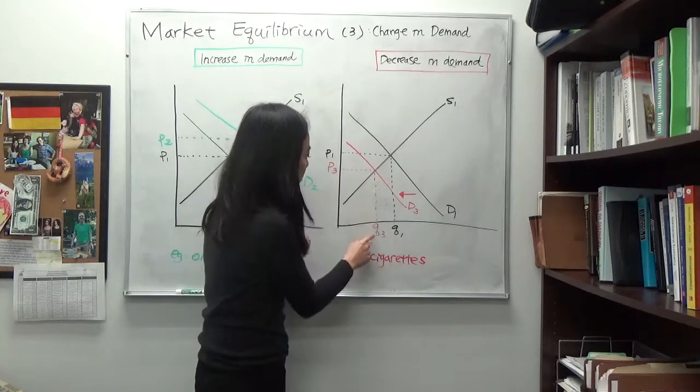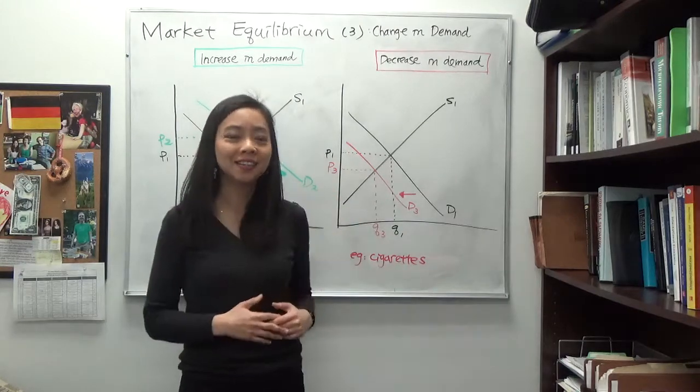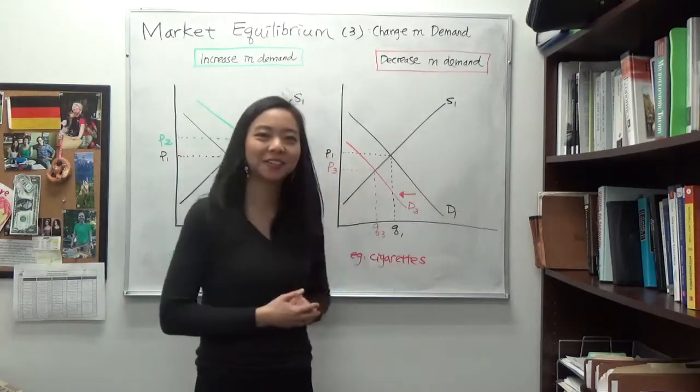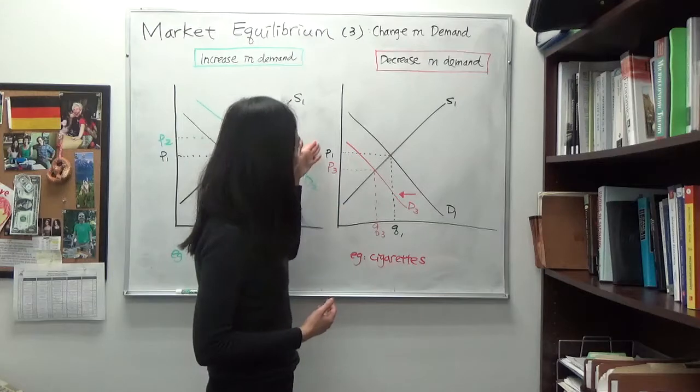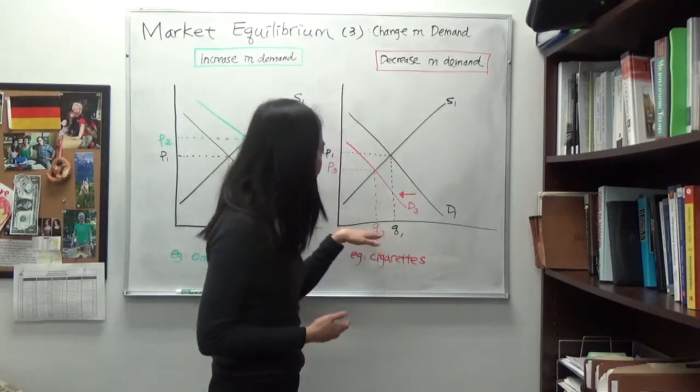And then you mark your Q3 and P3, that's a new quantity and new price. So you can see that when there is a decrease in demand, that's going to lower your equilibrium price and that's going to lower your equilibrium quantity.